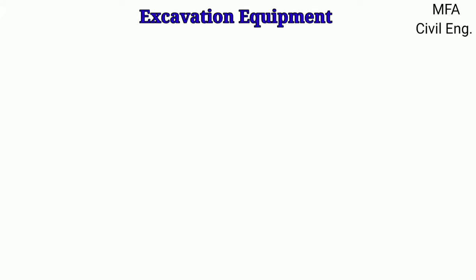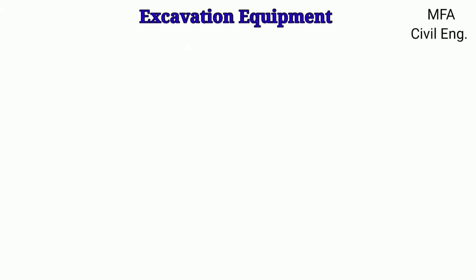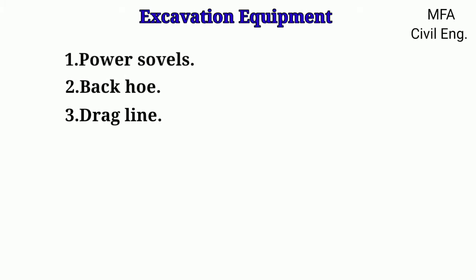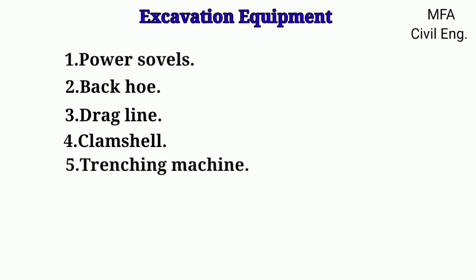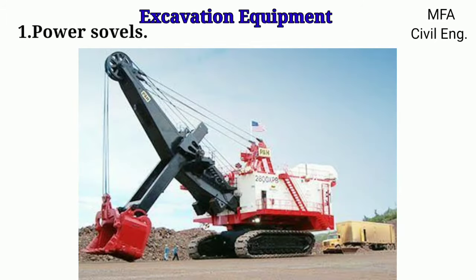Hello everyone, my name is Fuzzle, you are watching MFA Civil Engineering. There are various types of equipment which are used for the excavation of the earth, like power shovel, backhoe, dragline, clamshell, and trenching machines.